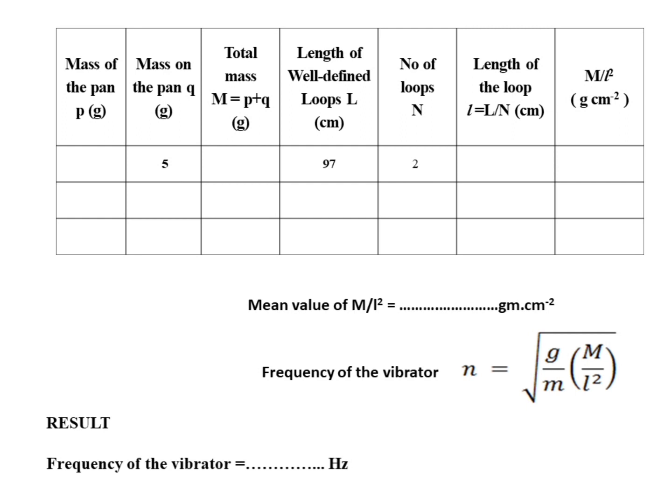We repeat this experiment by varying the mass on the pan. As we vary the mass, the total mass M, the length of the loop, and the number of loops will vary, but M by L squared will always remain constant. We find the mean value of M by L squared and substitute into the frequency equation: n equals root of (g by m) multiplied by (M by L squared). Our final result is the frequency of the vibrator in Hertz.